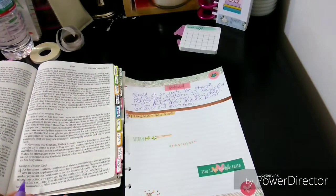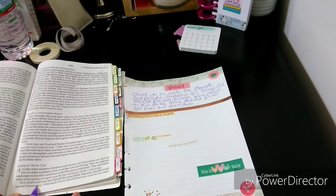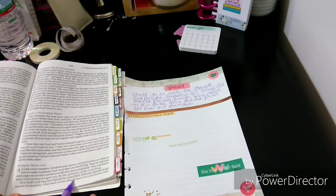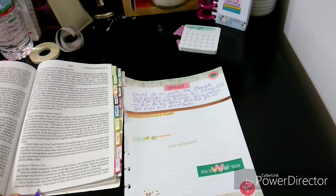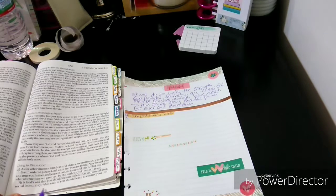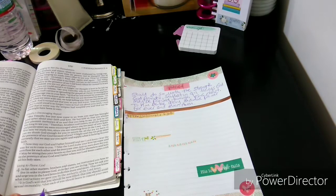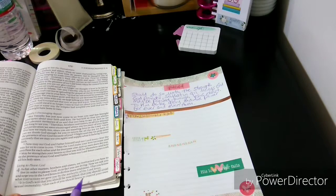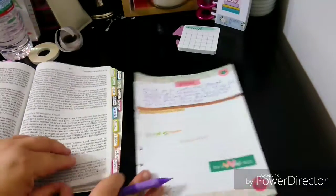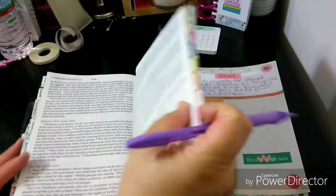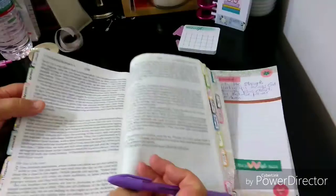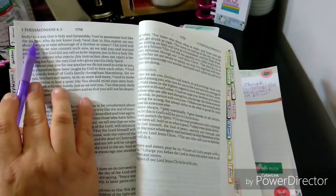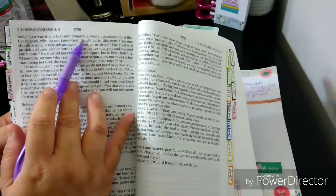So let's begin. I forgot to lift it. I'm just going to blow this up a little bit. So 4:3 says, it is God's will that you should be sanctified, that you should avoid sexual immorality. 4:4, that each of you should learn to control your own body in a way that is holy and honorable.